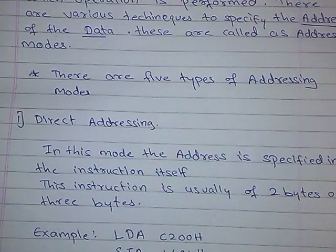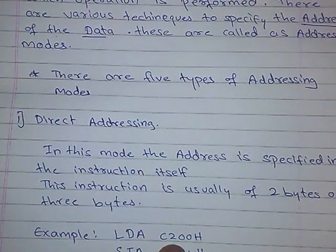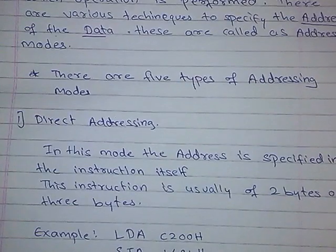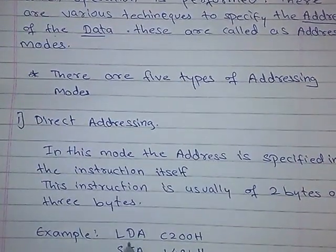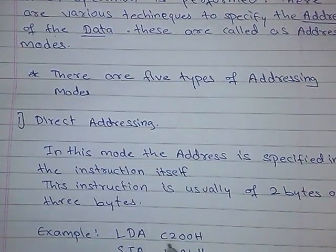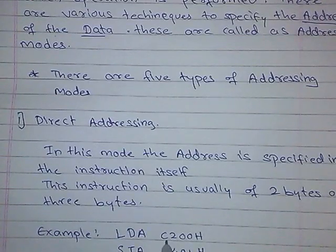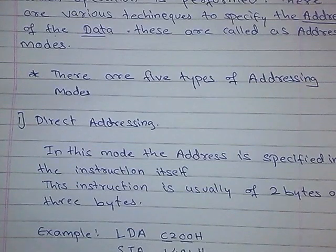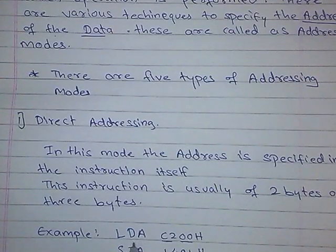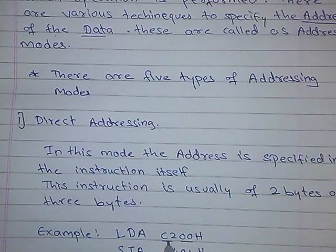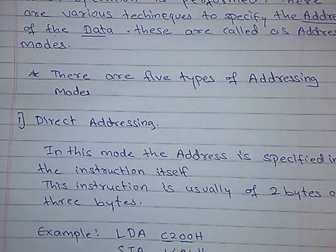Direct addressing mode instructions are of 2 bytes or 3 bytes. Here this is a 3-byte instruction, because this will take 1 byte for the instruction, and this address will take another byte and another byte. So this is a total of 3-byte instruction. The instruction itself is 1 byte, and this half of the address will take 1 byte and the other half another 1 byte — so this is a 3-byte instruction.